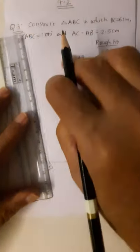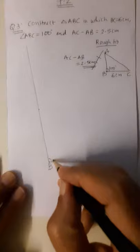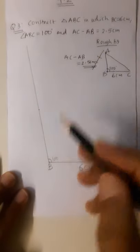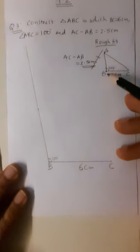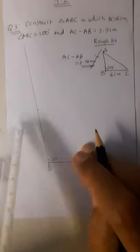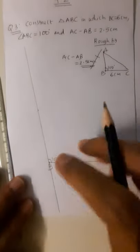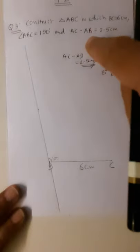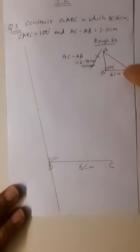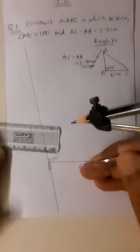This is the 100-degree angle I have drawn. Now the difference of opposite side and adjacent side is given — AC is the opposite side of angle B. In this case we have to extend this ray downward also. Why? Because the difference between AC and AB is 2.5 centimeter, and this difference we have to mark below the base, not above.